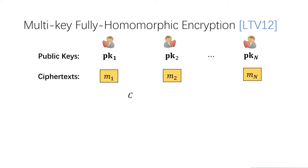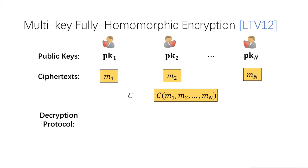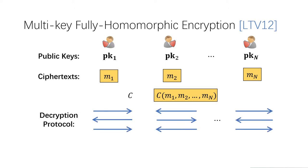If there is a circuit C, then anyone can do a homomorphic evaluation of C over these ciphertexts and obtain an encryption of the output. However, to obtain the actual output of the circuit C, all these parties need to be involved in a multi-round decryption protocol, and finally recover the output.